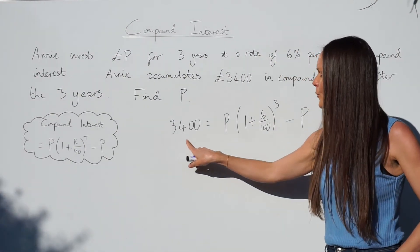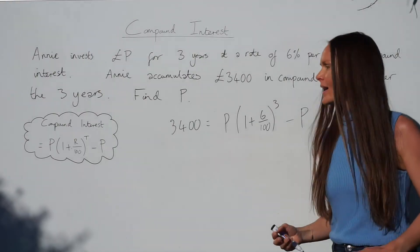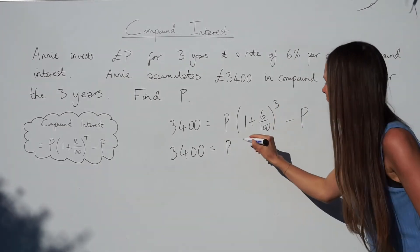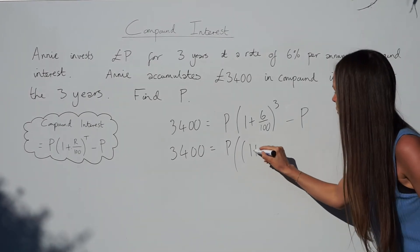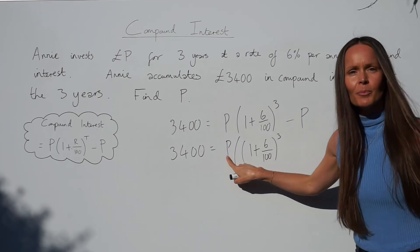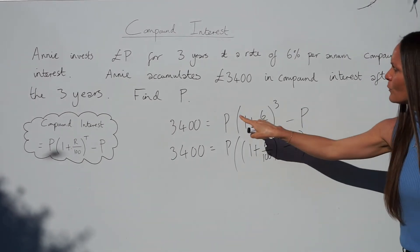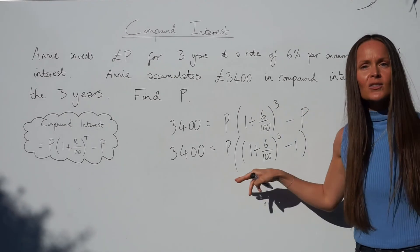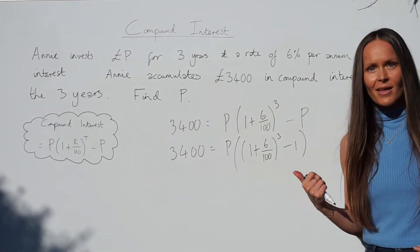Because we have more than one instance of P, we need to factorize the right-hand side. Taking out the common factor P, we open an extra set of brackets: P × [(1 + 6/100)³ − 1]. The negative P comes from multiplying P by negative one. This isolates P so we can solve the equation. If you're unsure about factorizing, there are other lessons that cover that topic.